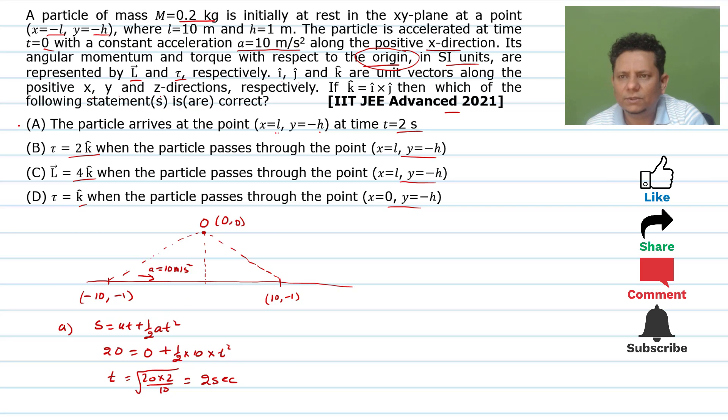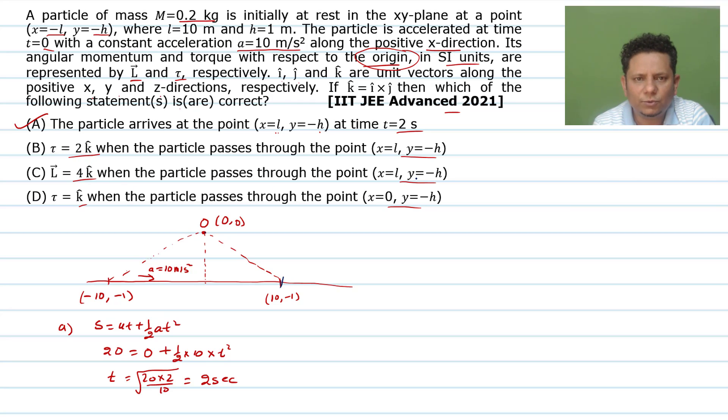So that means option A is right. Now the second option: when it passes through point (l, -h), its torque about origin value is 2k cap, and when it passes this point, its angular momentum value is 4k cap. We will evaluate these values.